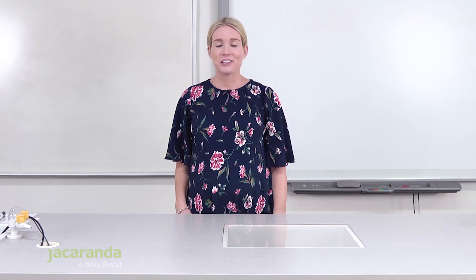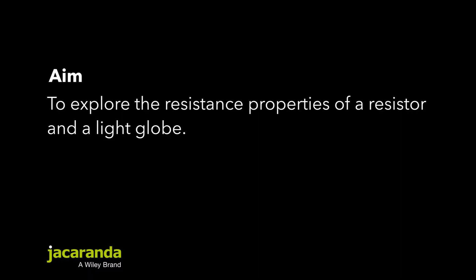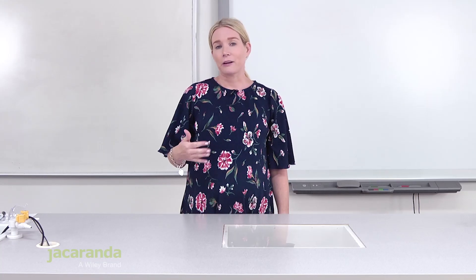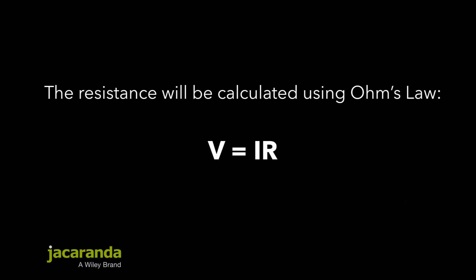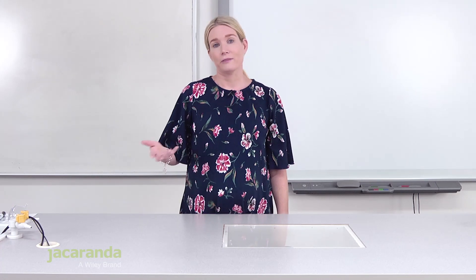This is a practical investigation on ohmic and non-ohmic devices. The aim is to explore the resistance properties of a resistor and a light globe. We will hook each device up into a simple circuit and measure the potential difference across each device as well as the current flowing through each device. Using this data, we will use Ohm's law V equals IR to calculate the resistance of each device and determine whether the devices are ohmic or non-ohmic.